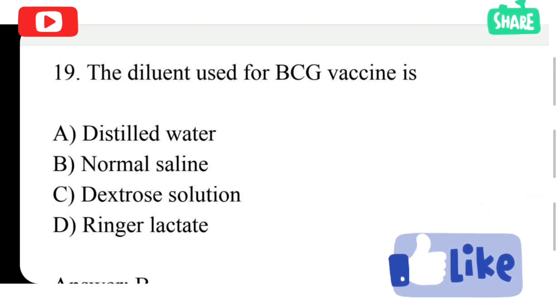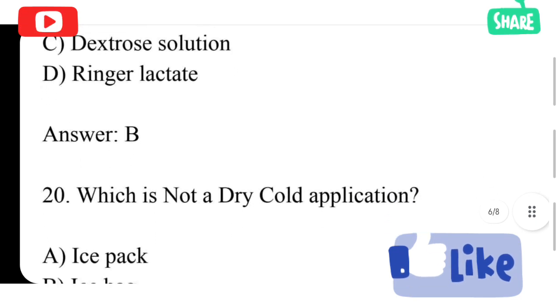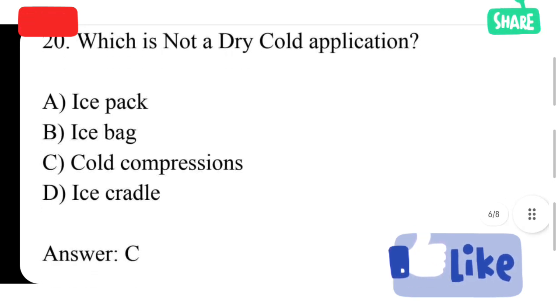The diluent used for BCG vaccine is option A distilled water, option B normal saline, option C dextrose solution, option D Ringer lactate. Next question: which is not a dry cold application - option A ice pack, option B ice bag, option C cold compression, option D ice cradle. Option C is correct answer, cold compression is not a dry cold application.